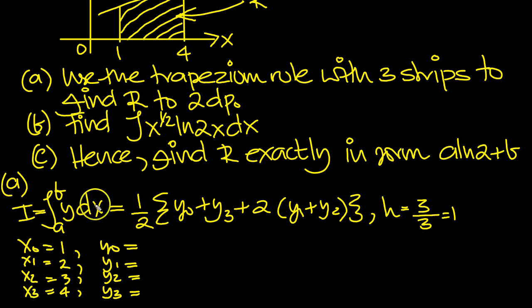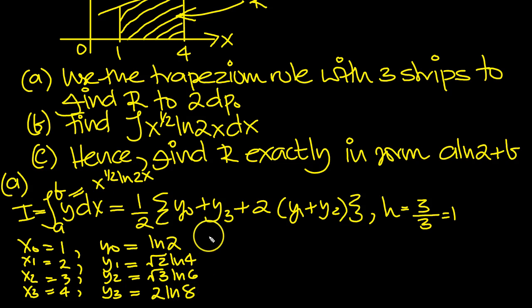Y0, put 1 in into the integrand x to the half, ln of 2x. So 1 in here. 1 to the half is 1, log of 2 times 1 is log 2. Put 2 in, root 2, log 4. Put 3 in, root 3, log 6. And put 4 in, root 4, log 8, which is 2 log 8. So there's our y values.